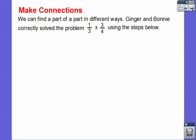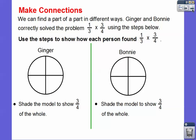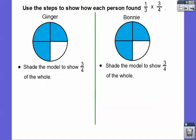Let's try a different way to do this. We can find a part of a part in different ways. Last time we found 2/3 of 3/4. This time we're going to find 1/3 of 3/4 in a different way. Here Ginger and Bonnie correctly solved the problem 1/3 times 3/4 using the steps below. They did circles — these are called fraction circles. The first step says: shade the model to show 3/4. So we've got these circles cut into fourths, and we shade three of them blue — for both Ginger and Bonnie.